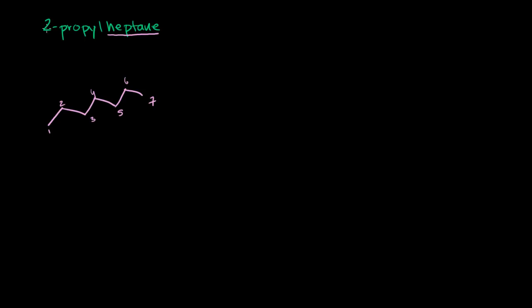We have a propyl group. Propyl, that is 3 carbons. So on the second carbon, we have a propyl group - that's 3 carbons. So that is 1, 2, 3. And so the way we drew it was just like this.